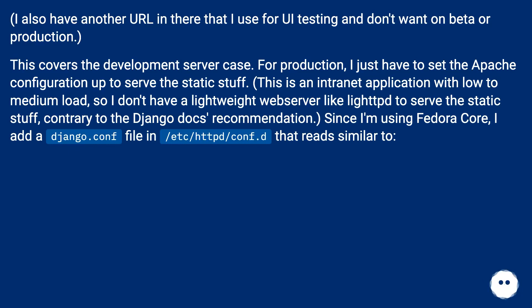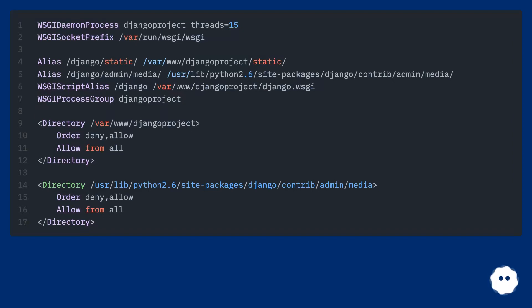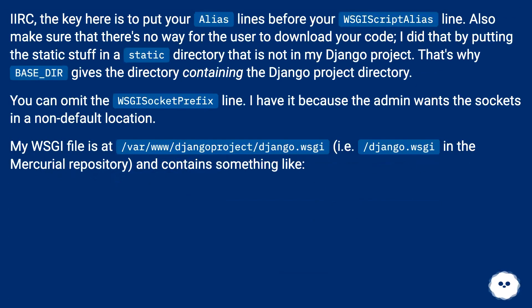This is an intranet application with low to medium load, so I don't have a lightweight web server like lighttpd to serve the static files — contrary to the Django docs recommendation. Since I'm using Fedora Core, I add a django.conf file in /etc/httpd/conf.d. The key is to put your alias lines before your WSGIScriptAlias line. Also, make sure there's no way for the user to download your code by putting static files in a directory that is not in your Django project. That's why base_dir gives the directory containing the Django project directory. You can omit the WSGI socket prefix line — I have it because the admin wants sockets in a non-default location.